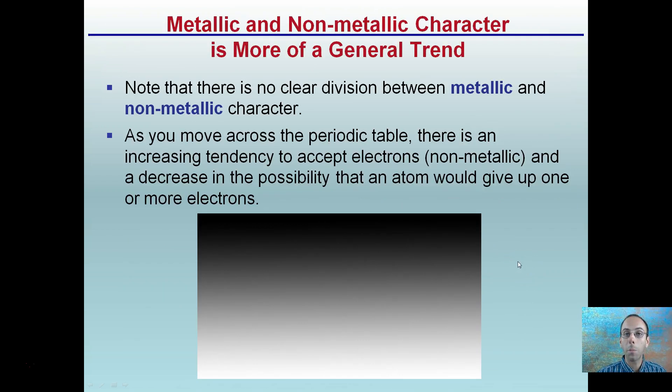Lastly here, metallic and non-metallic character is more of a general trend. There's no clear distinct division between metallic and non-metallic character. As you move across the periodic table, there's an increasing tendency to accept electrons, which is a non-metallic property, and decrease the possibility of an atom that would give up one or more electrons. The picture here of going from black to white, we see this large gray area. So it's showing there's not a clear division. It's kind of this general trend that occurs.